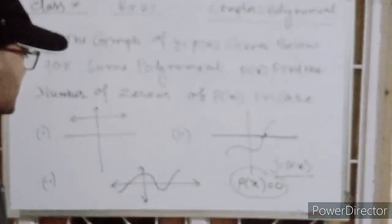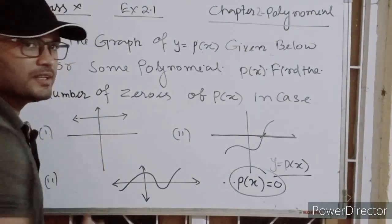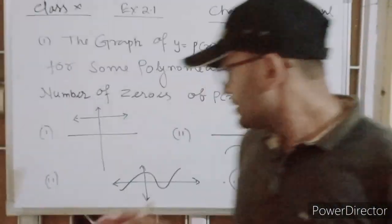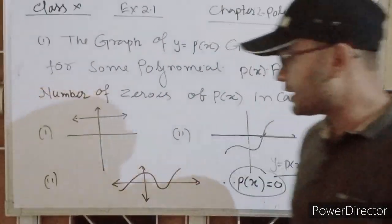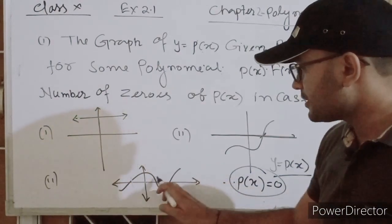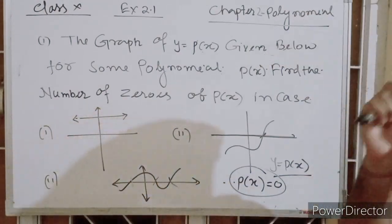Once here there is no cut in x-axis, therefore this is very, you cannot find any zeros of this polynomial. And here two points, maybe three points, cut x-axis, therefore zeros of the polynomial here: three.